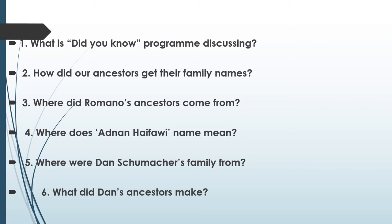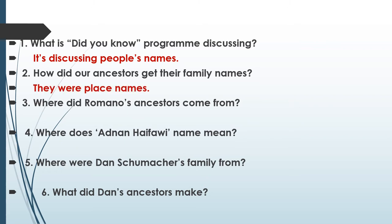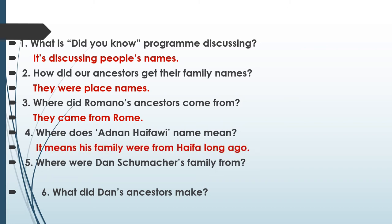Now let's answer these questions. Number one: what is the 'Did You Know' program discussing? It's discussing people's names. Number two: how did our ancestors give their family names? They were place names. Number three: where did Romano's ancestors come from? They came from Rome. Number four: what does Adnan Hayfawi's name mean? It means his family were from Haifa long ago.